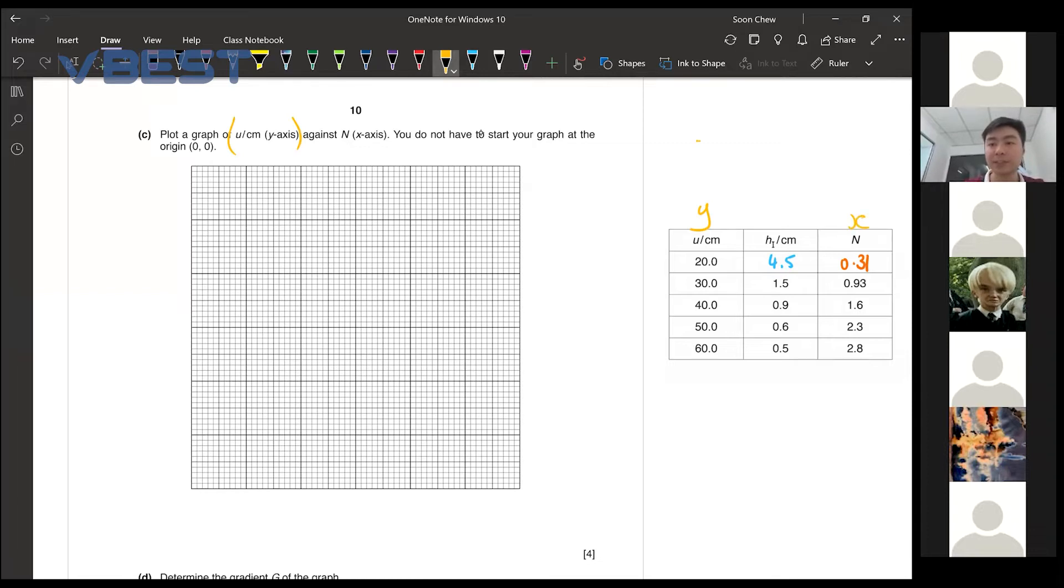They want you to draw this one on your y-axis. And then your x-axis is the N. For your y-axis, your maximum is 60. So somehow you need to fit it inside your graph. But because they said you don't need to start at the origin, maybe you can start at 20, 30, 40, 50, 60, 70, and so on.